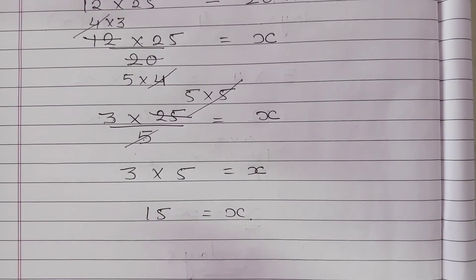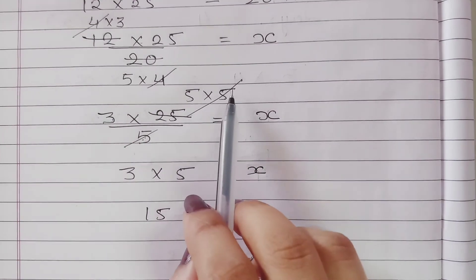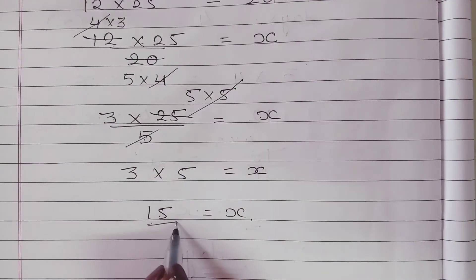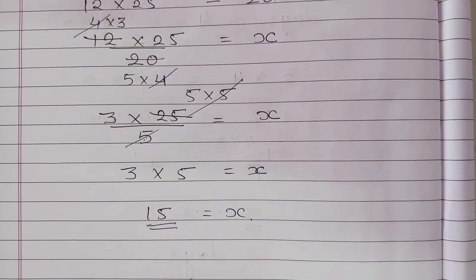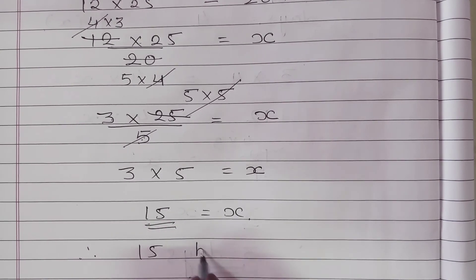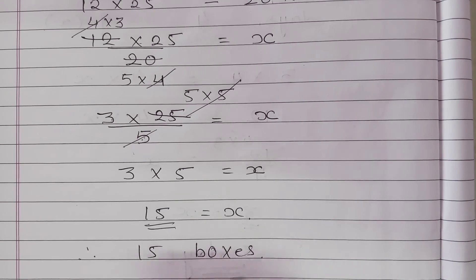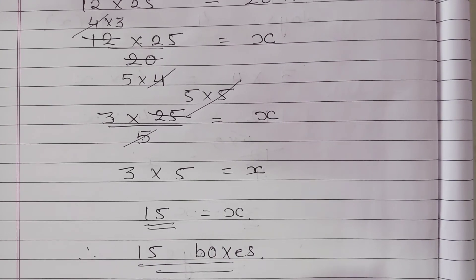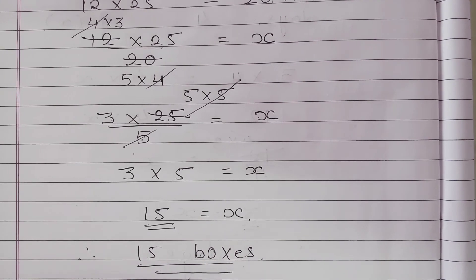So if we have 20 bottles in each box, how many boxes will we need? The answer is 15 boxes. This was Question 7 of Exercise 13.2. Thank you.